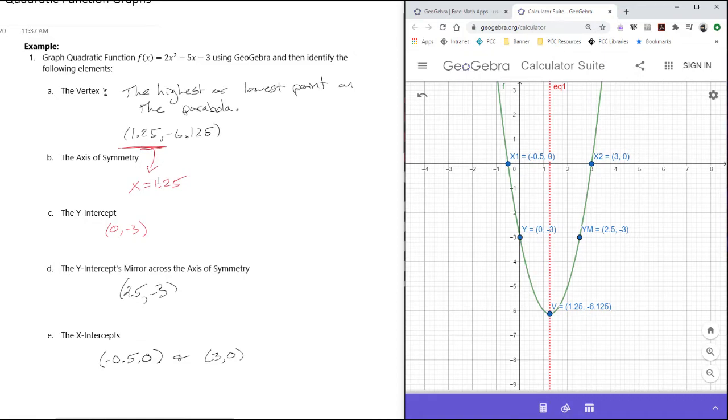That's it. That's what we're looking for here. We want to make sure that we understand how to use GeoGebra to find these key elements. Also, we're using this to remind everyone what these key elements are. Not every class talks about the mirror point of the y-intercept, but I hope that's pretty straightforward. It's just take the y-intercept, and if I go straight across the axis of symmetry, then what point is that over there?